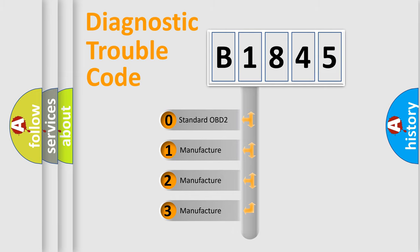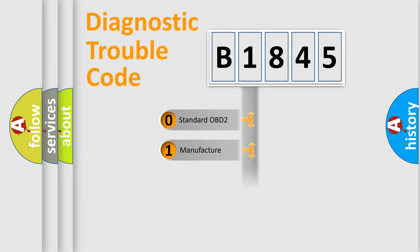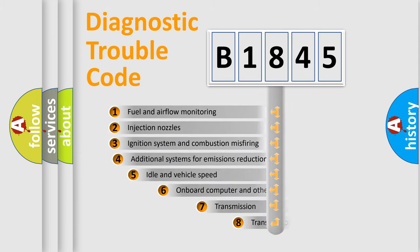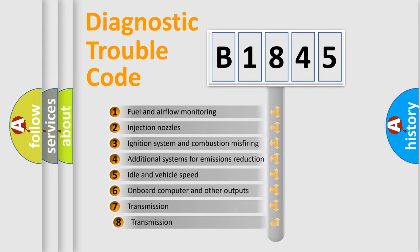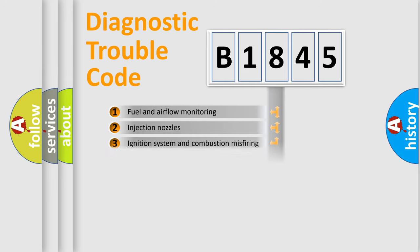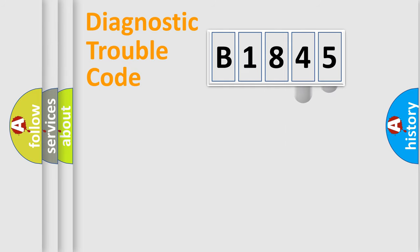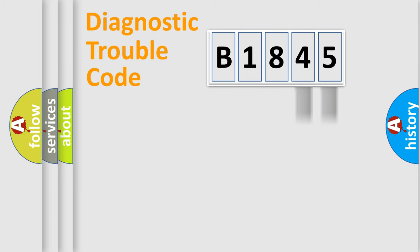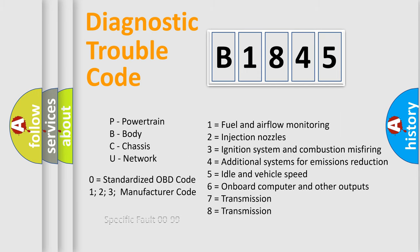If the second character is expressed as zero, it is a standardized error. In the case of numbers 1, 2, or 3, it is a manufacturer-specific error. The third character specifies a subset of errors, and this distribution is valid only for the standardized DTC code. Only the last two characters define the specific fault within the group.